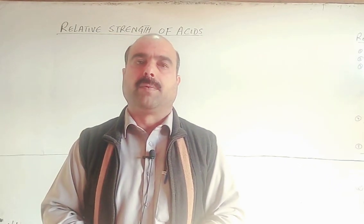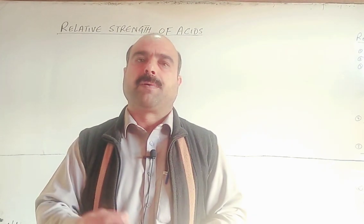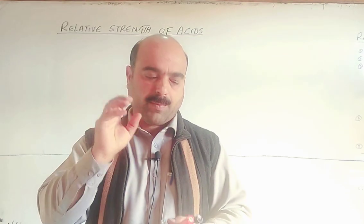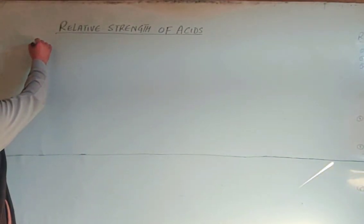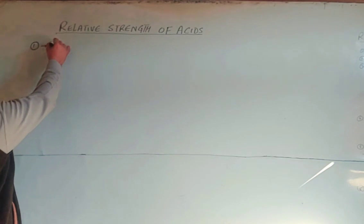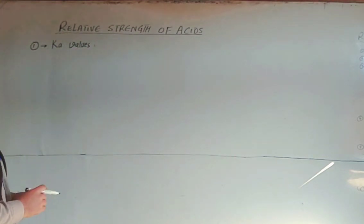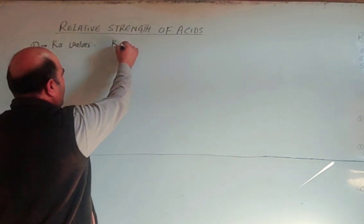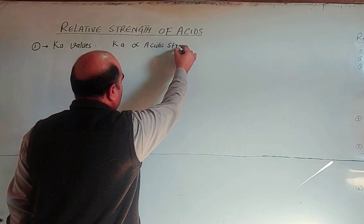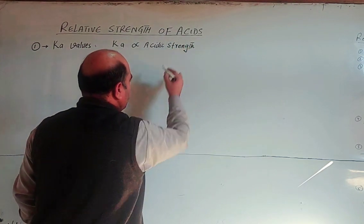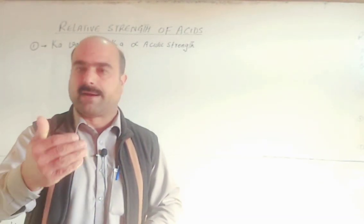Students, when comparing different acids using MCQs, you need tricks to determine which acid is stronger. Point number one: when Ka values are given for different acids, the Ka value has a direct relationship with acidic strength. The higher the Ka value of an acid, the stronger the acid — higher the value of Ka, higher will be the acidic strength.